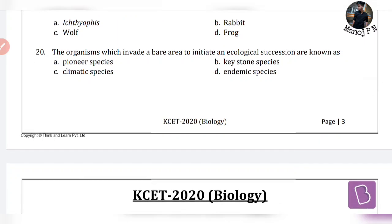Question 20: the organisms which invade a bare area to initiate an ecological succession are called — pioneer species. The organisms which invade a bare area to initiate an ecological succession are called pioneer species. Continue to the next video. Till then, keep learning. Thanks for watching. Happy learning. Bye bye.